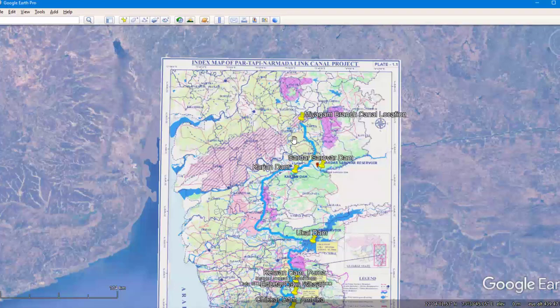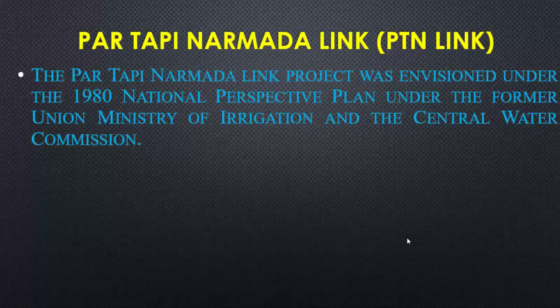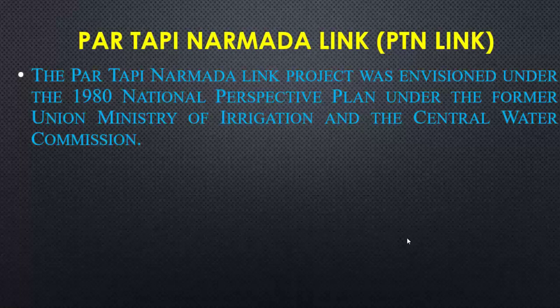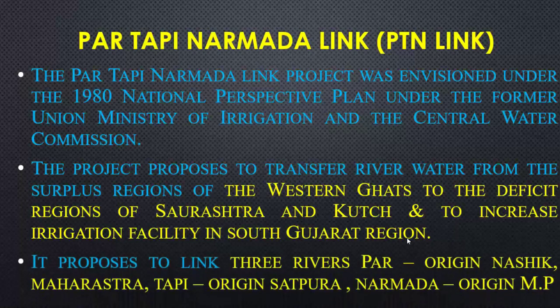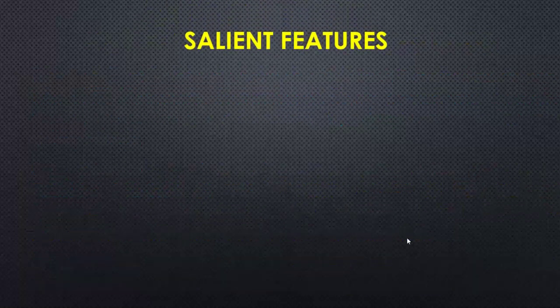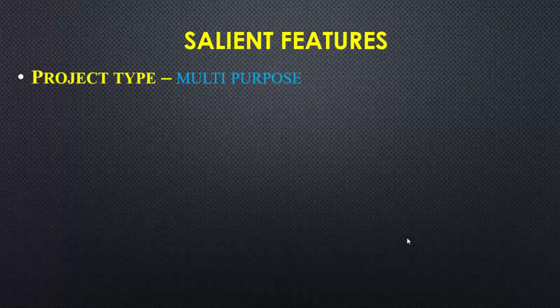The Par-Tapi-Narmada link project was actually an idea of the 1980s, based on the National Perspective Plan under the former Union Ministry of Irrigation and the Central Water Commission. The project proposes to transfer river water from the surplus region of the Western Ghats to the deficit regions of Saurashtra and Kutch, and to increase irrigation facilities in the south Gujarat region by linking three different rivers.